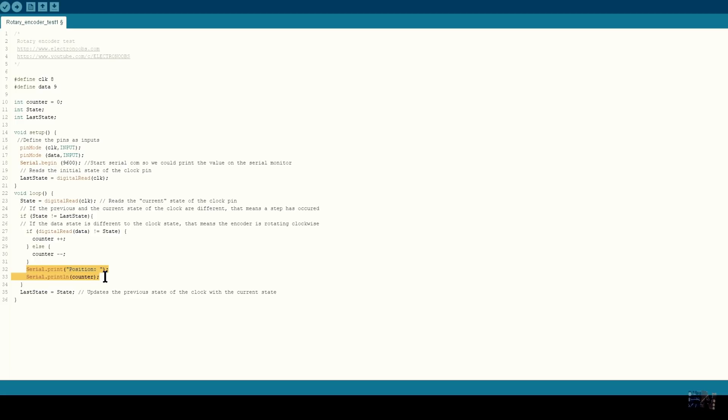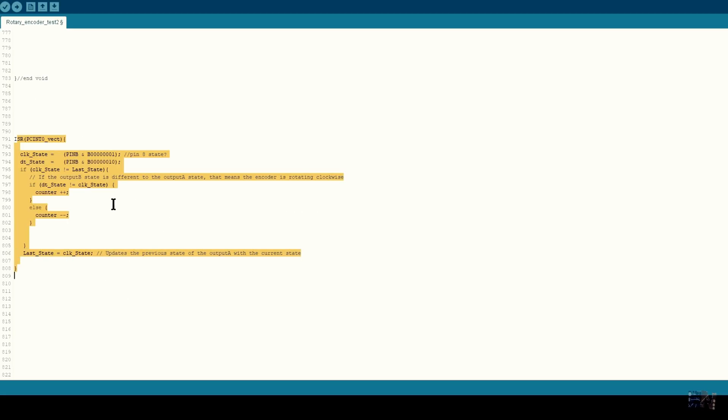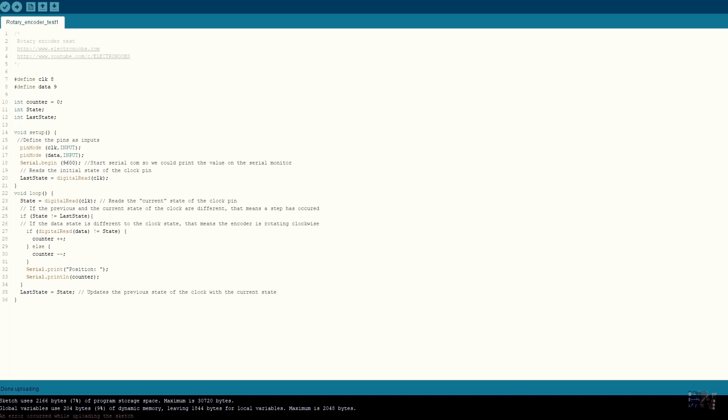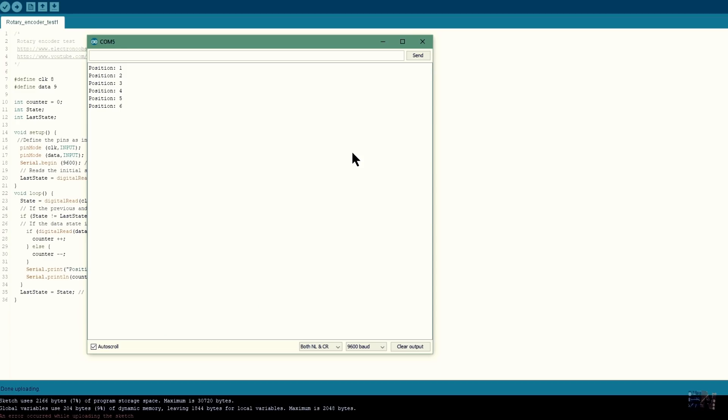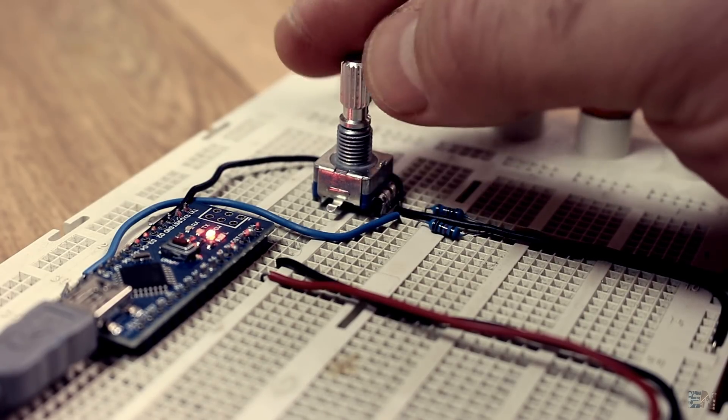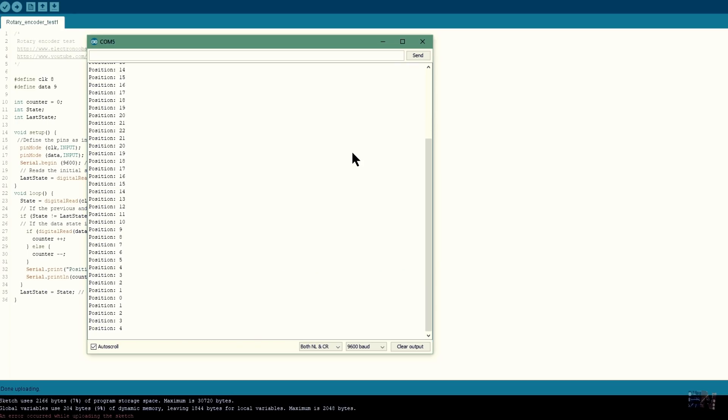By the way guys, the final code is made with pin interruptions instead of digital read in the void loop, in order to make sure that we won't lose any step. But for this example, using digital read in the void loop is ok. So upload the code and open the serial monitor. As you can see, I start rotating the encoder and I increase or decrease the counter value. Easy, right?